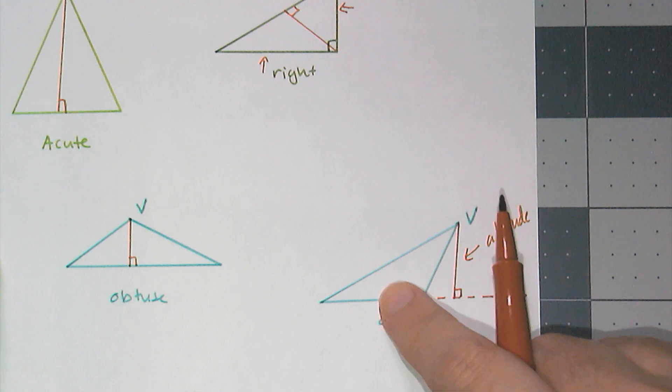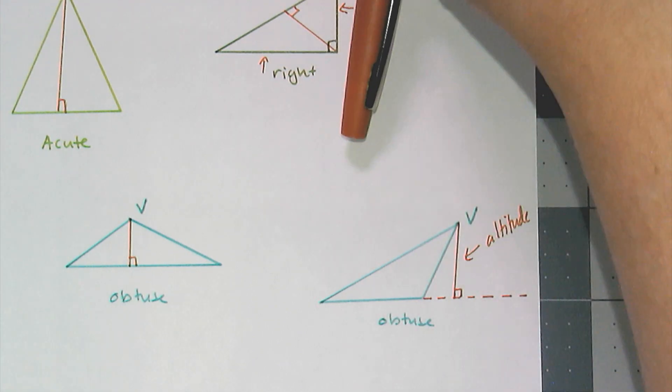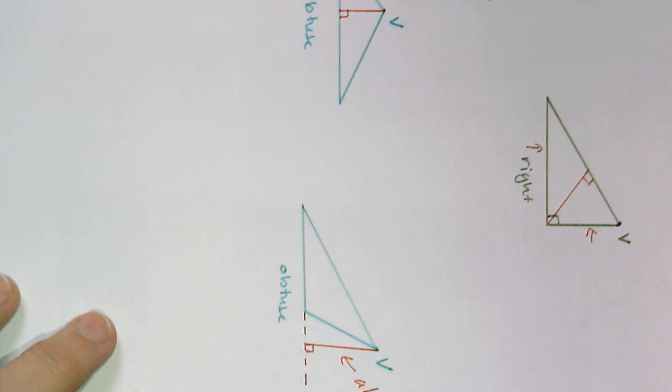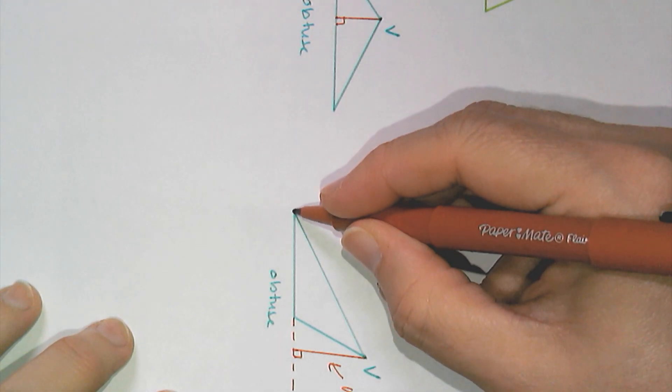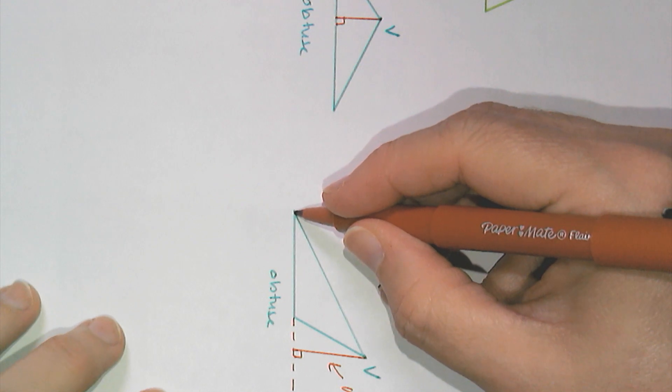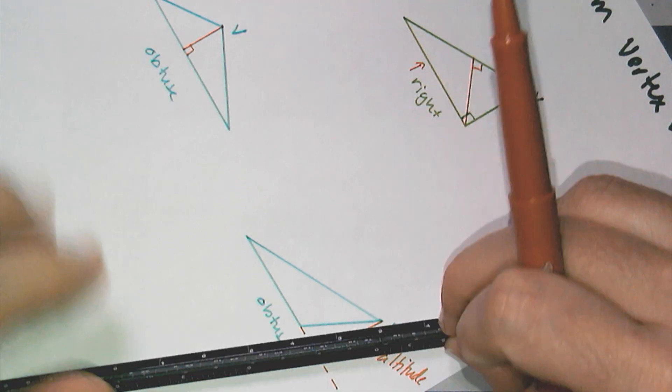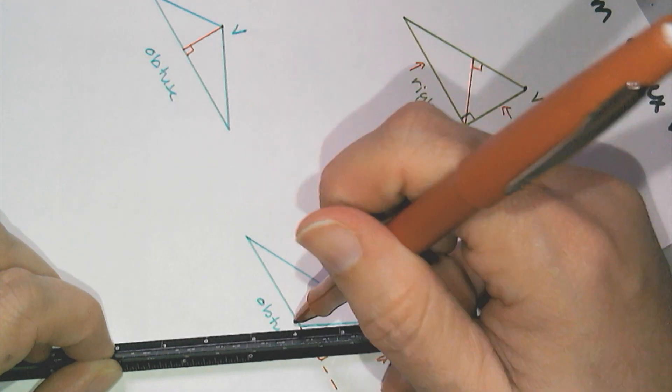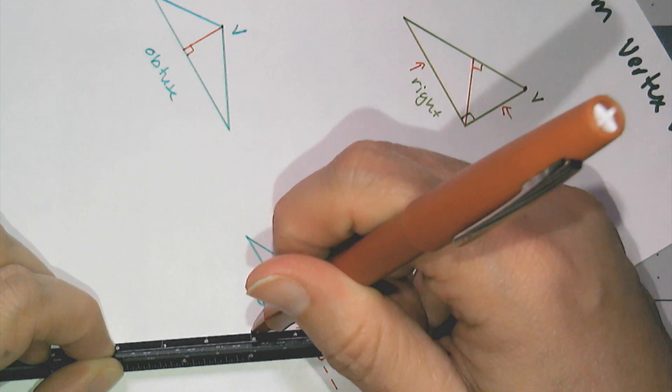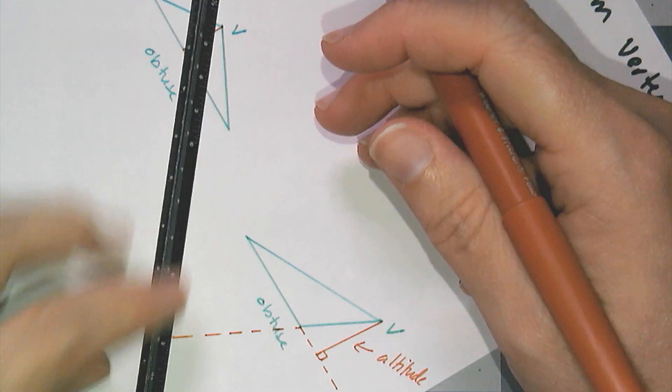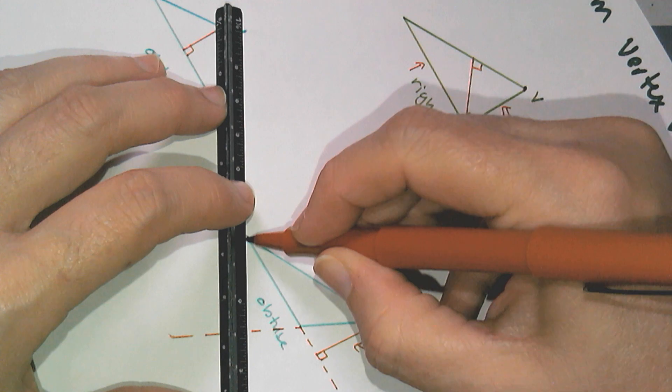And if I want to see where this one's vertex is, it's actually really easy to just rotate the image. So this is the vertex that I want to draw the altitude for. And I'm going to have to extend this side length out because the altitude is going to be external.